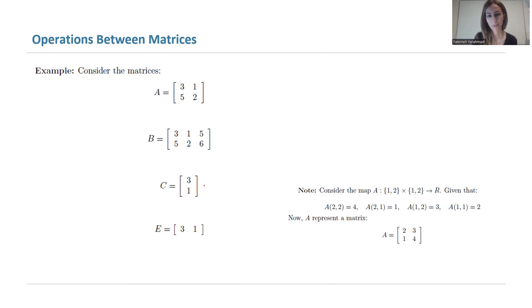We can also use maps or functions to define matrices. This is going to be discussed in other chapters. Consider a map like A mapping the Cartesian product between two sets 1 and 2, and map it to R, real numbers. What it's going to do is take 2 and 2 and map it to 4. It's going to map 2 and 1 to 1, map 1 and 2 to 3, and map 1 and 1 to 2. You're basically defining a matrix this way. Again, we're going to discuss this later in our class.